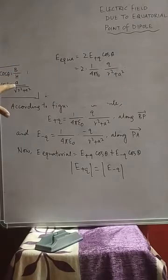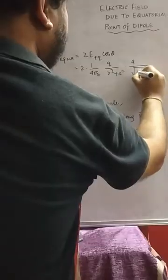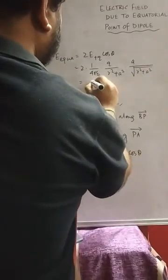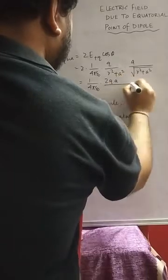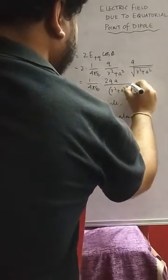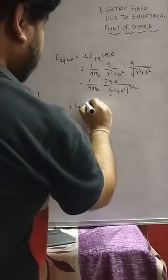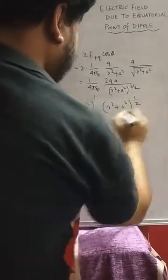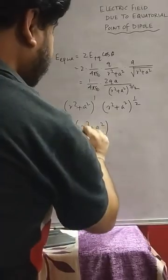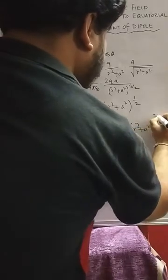So 2·E+q·cosθ = 2 × (1/4πε₀) × q/(r² + a²) × cosθ. From the triangle, cosθ = base/hypotenuse = a / √(r² + a²). Substituting, we get (1/4πε₀) × 2qa / (r² + a²)^(3/2), because (r² + a²)^1 × (r² + a²)^(1/2) = (r² + a²)^(3/2).